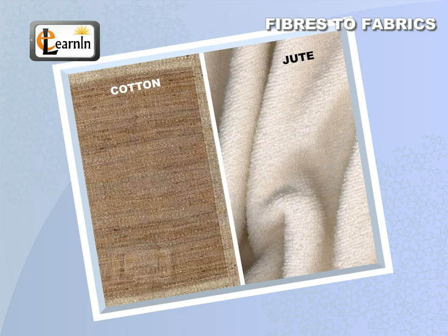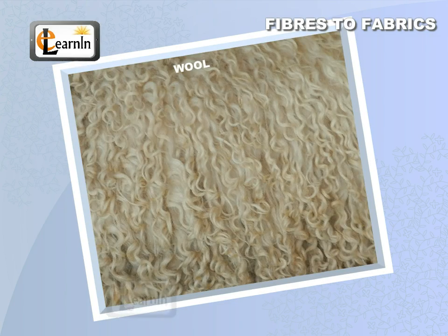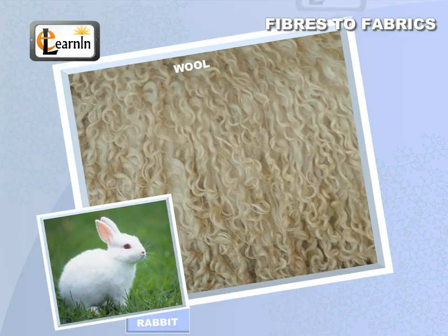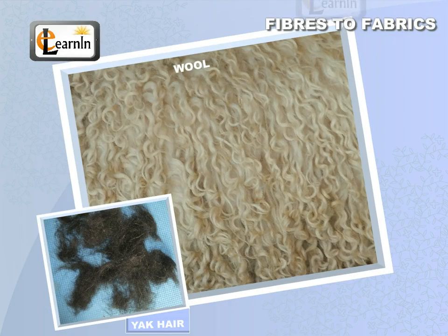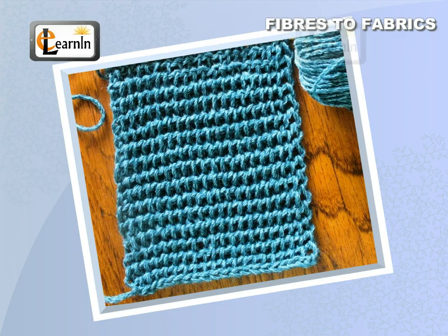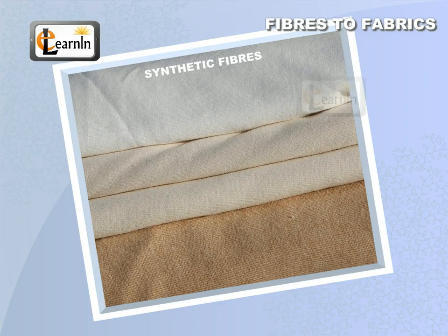Cotton and jute are obtained from plants. Fiber like wool can be drawn from the fleece of sheep or goats, and from rabbit and yak hair. The cocoon of silkworm provides us with silk.